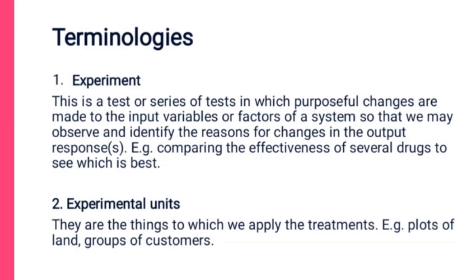An experimental unit is the thing to which we apply the treatment. Examples include a plot of land or groups of customers. Using our drug example, the experimental units will be the patients who are suffering from headache, since they are the ones we apply the treatment to. The nature of the experiment helps you derive what your experimental units will be.